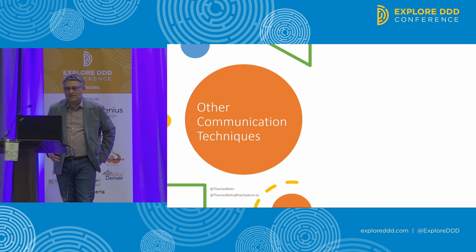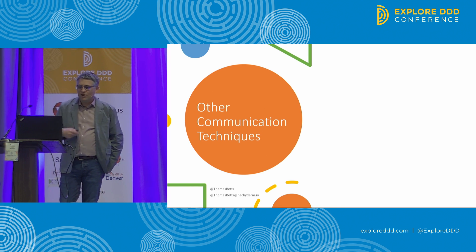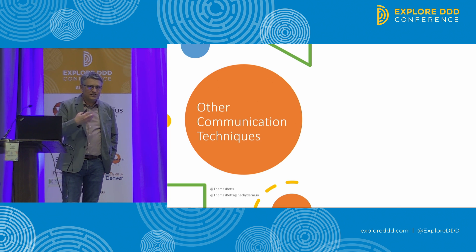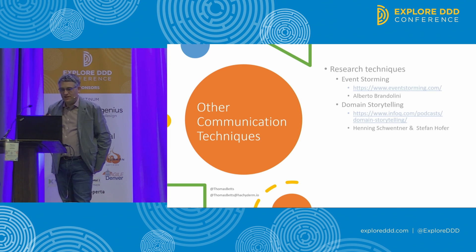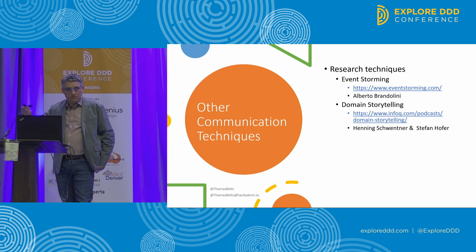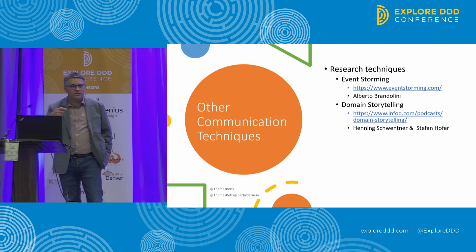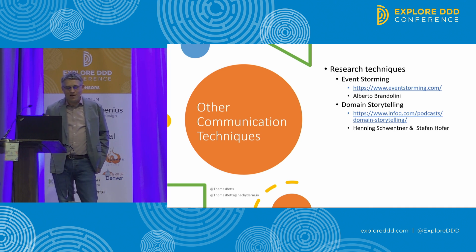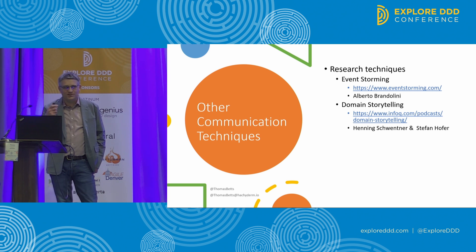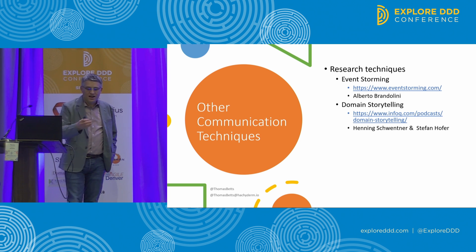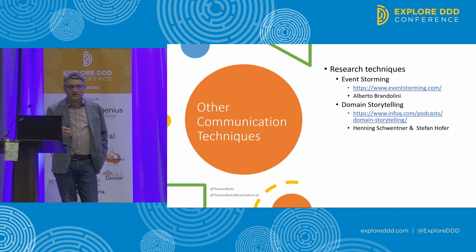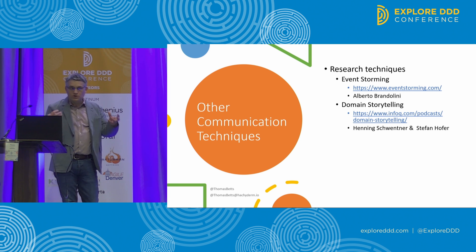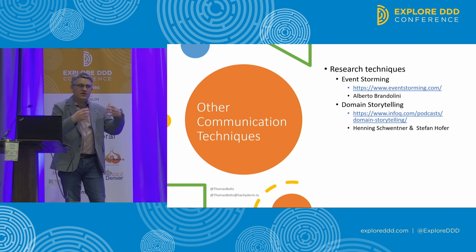During the first phase of our scientific method — the research phase — we're trying to figure out what the decision we need to make is, and that requires coming up with new ways to learn our business domain and the problem we're trying to solve. Alberto does a great talk about event storming, and Henning is here talking about domain storytelling. Both are great techniques to go out and explore a model that you didn't know before — and that feeds into making the decisions once you understand your business domain.